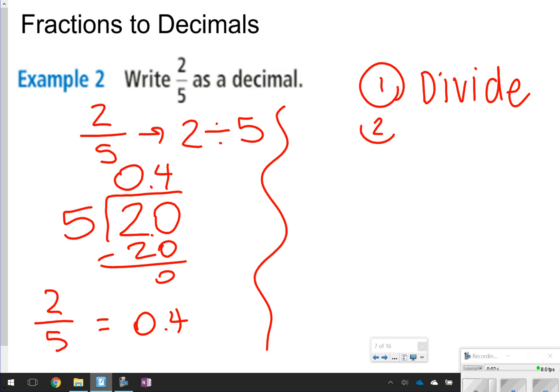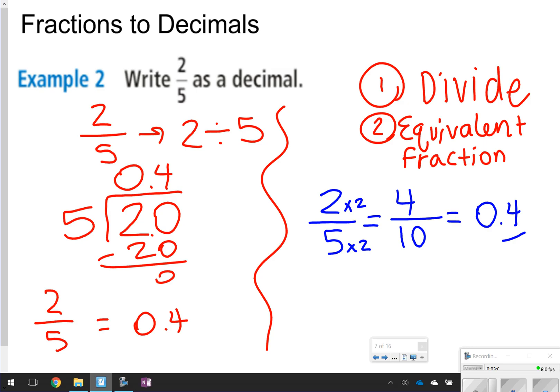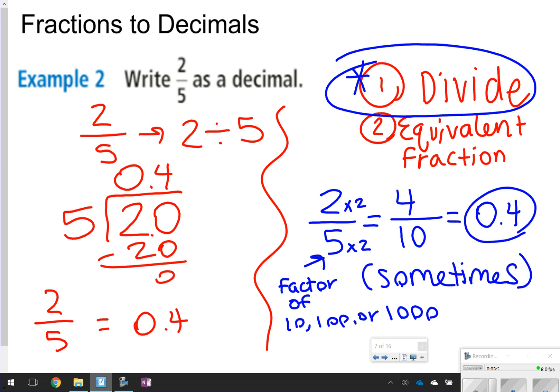Another way you could do that is by using an equivalent fraction. I know that 2 fifths can be equal to something over 10, because 5 can go into 10 two times. I know that I can do the same thing to the 2 up at the top of the numerator to get my new numerator. 4 tenths written as a fraction is also 0.4 written as a decimal. Equivalent fraction only works sometimes, and the reason is because this number right here has to be a factor of tens, hundreds, or thousands for it to work. If it's not, then you do have to use the division way. So I would maybe choose to always divide, because that way always, always will work.